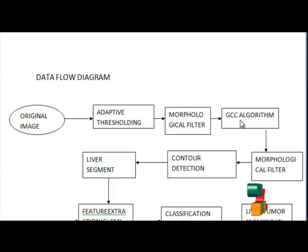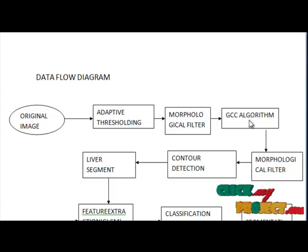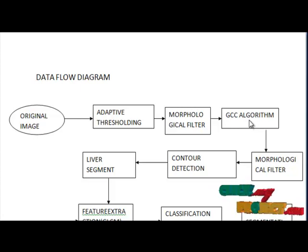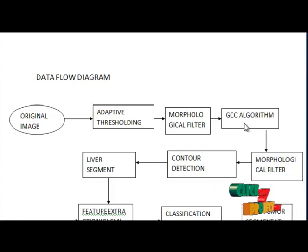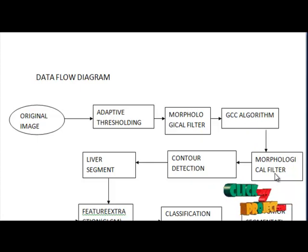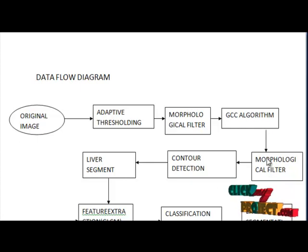The next step is the GCC algorithm. GCC, the Gain Connected Component, is developed for the reduction of the largest connected component. It contains two modules: the first for the labeling of connected components, and the second for finding the largest connected component. The next morphological filter is used to fill the holes of the liver.